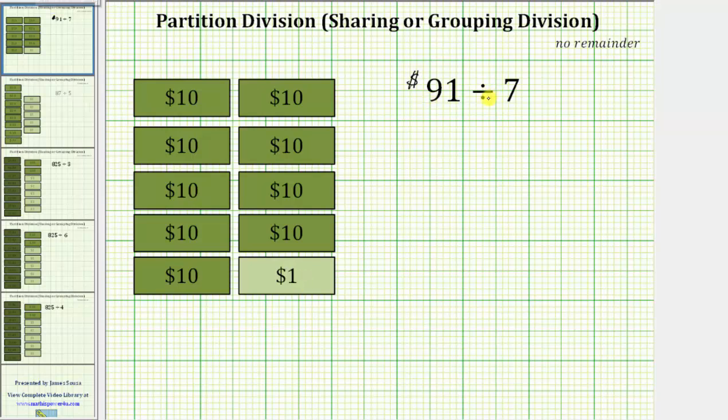The next step is to write this quotient in long division form. We have the dividend of 91 divided by the divisor of seven. And now we'll form a column for the nine $10 bills and the one $1 bill.